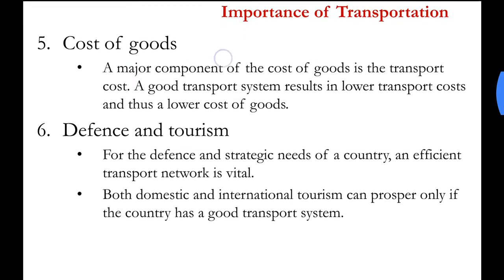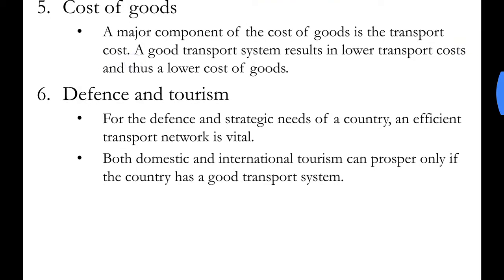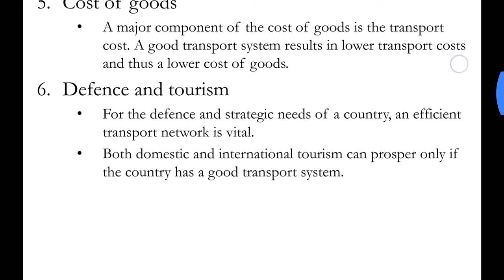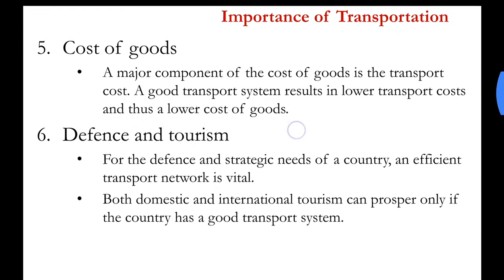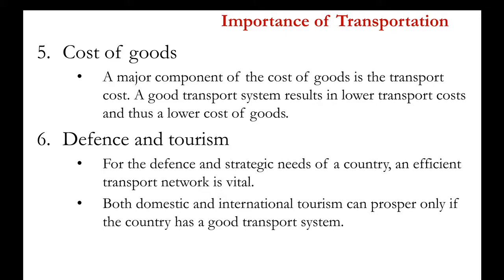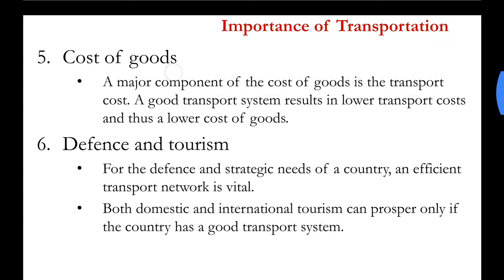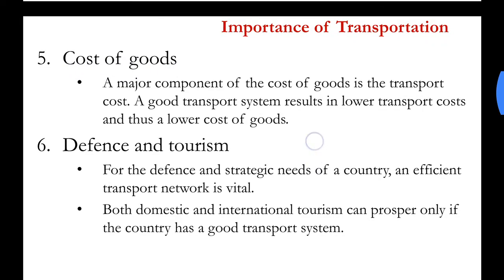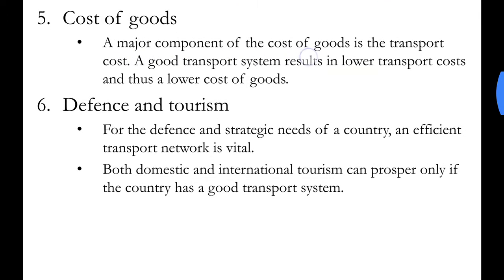Next: cost of goods. A major component of the cost of goods is the transport cost. A good transport system results in lower transport costs and thus a lower cost of goods. If there is an efficient transport system in our country, the cost of goods would be less. Since time is money, if the transport is good and speedy, it could save money and hence we could get finished products at a lower cost.